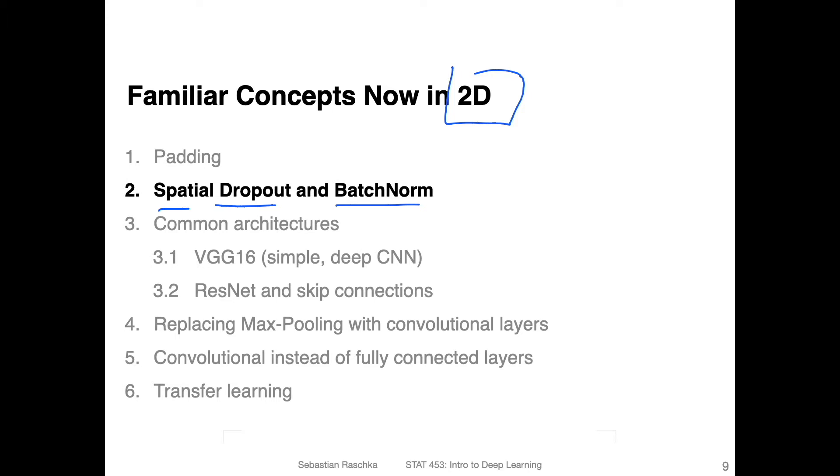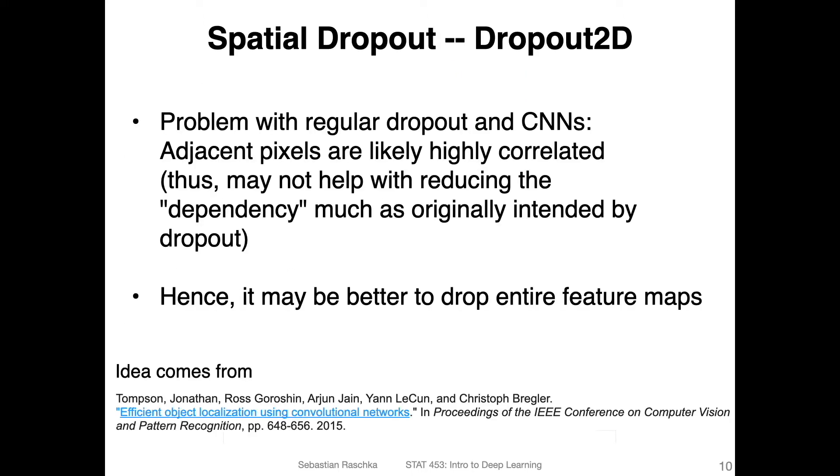So before we talked about dropout in the multilayer perceptron context, so why do we even have to invent a new version of dropout now? Why do we have to modify it in the first place? Well, you can of course use the regular dropout you learned about before.